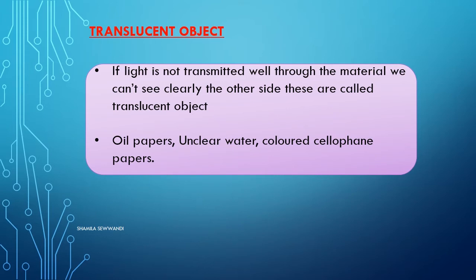Examples of translucent objects: oil paper, unclear water, and colored cellophane paper.